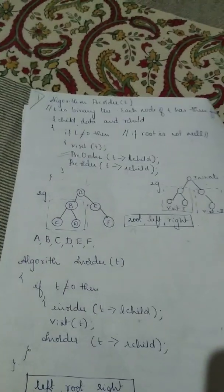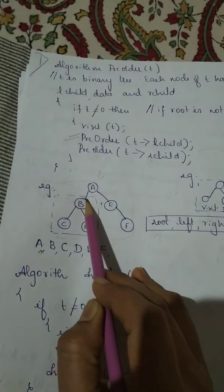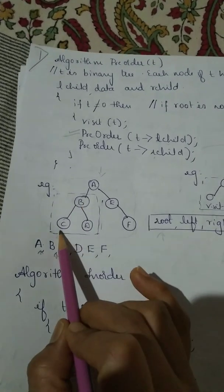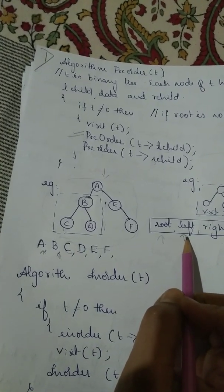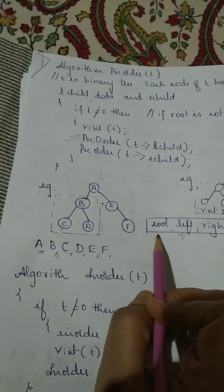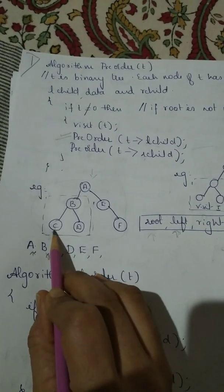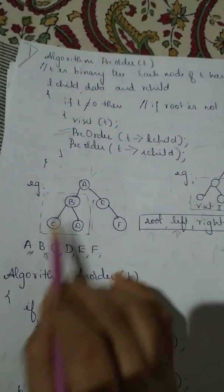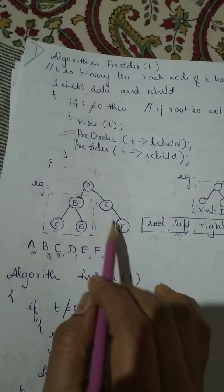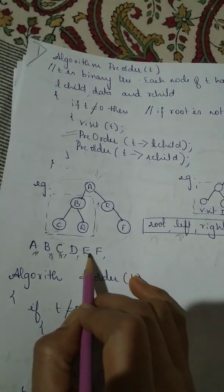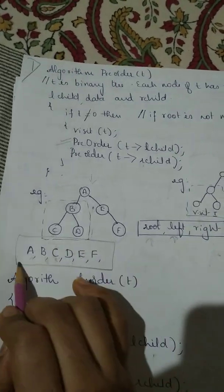Taking an example: visit root A first. Then pre-order left child — B is the root, B is visited. Then go for C, which is a left child — visit C. Once the left visit is over, go for right: D is the right child. Root A is already visited; this was the left subtree of A, so go for the right child E. E has a left child, so visit E first as root, then there is no left child, so go for right. This is the pre-order binary tree traversal sequence: A, B, C, D, E, F.